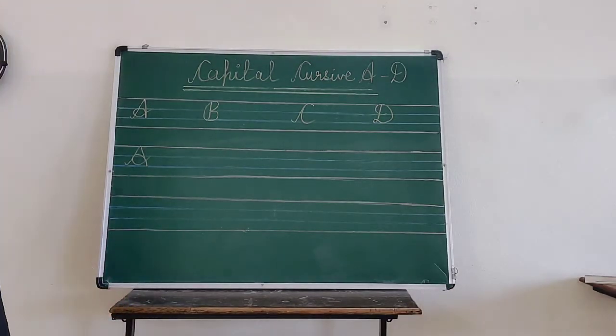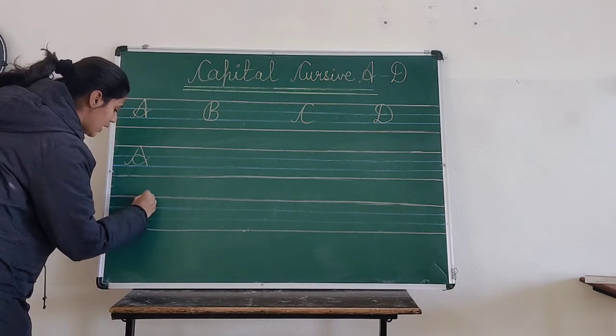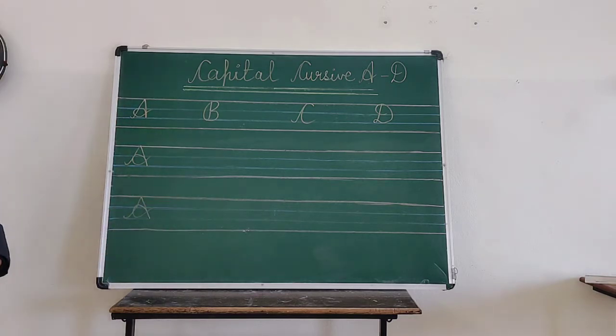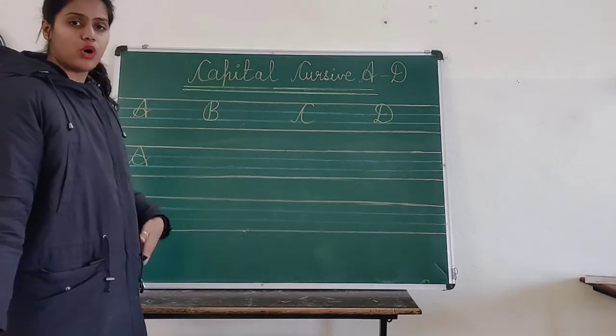Now again we have to write capital A. Make one small curve, slanted line, another slanted line, make one circle. And this is how we have to write A for apple. Now B for ball.